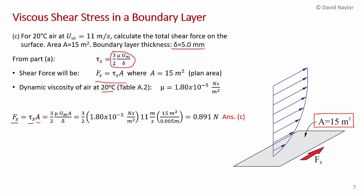Substituting the values: the dynamic viscosity of air at 20°C from table A2 is μ = 1.8 × 10⁻⁵ N·s/m². The free stream velocity is 11 m/s, the area is 15 m², and the boundary layer thickness is δ = 5 mm = 0.005 m. Balancing units — meters, meters squared, and seconds all cancel — leaves newtons. The total force in the positive x direction on the surface is 0.891 newtons, which is a very small force.